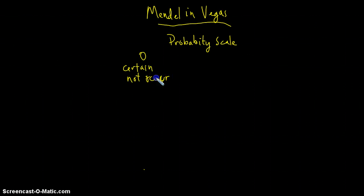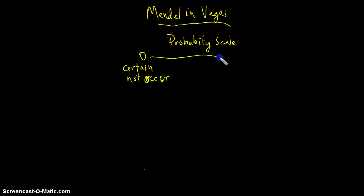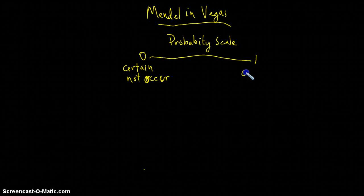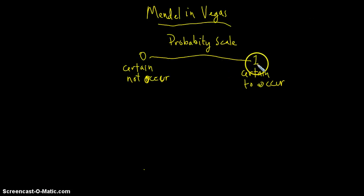For instance, the odds that I will ever cheer for the New England Patriots, that is at zero. On the other end of the scale is one, and at one, an event is certain to occur. For instance, your odds of getting AP credit on the AP exam. So again, the odds range from zero to one.